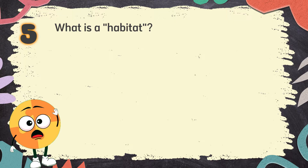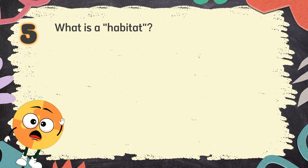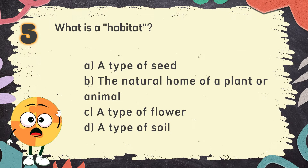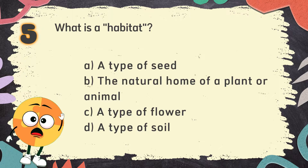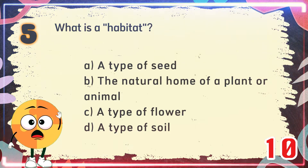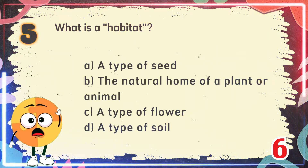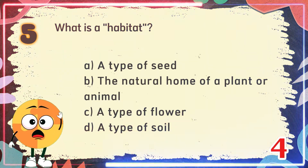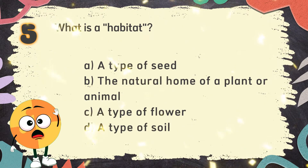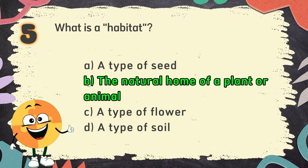Number 5: What is a habitat? The choices are: A. A type of seed, B. The natural home of a plant or animal, C. A type of flower, D. A type of flower. The correct answer is B. The natural home of a plant or animal.